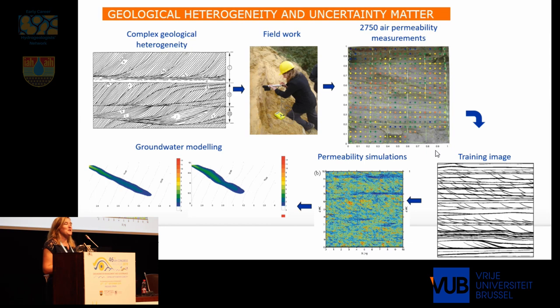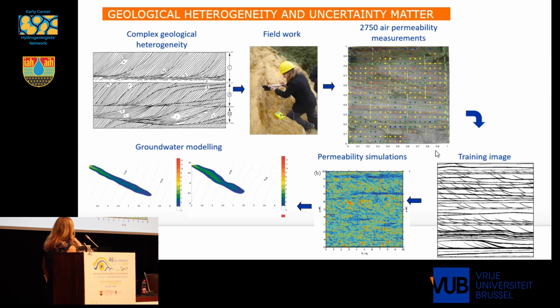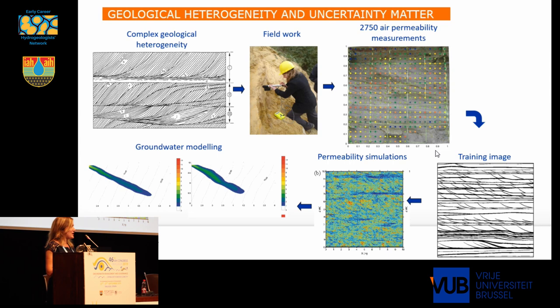I have, for example, spent quite some time working on a sand aquifer in Belgium, the Brussels aquifer. This sand from a distance might look quite homogeneous, but if you look closer you can see this kind of geological heterogeneity. We have very thin clay drapes within the sand which show quite complex patterns of heterogeneity. We mapped all these clay drapes, their orientation, their thicknesses, how they occur and where. We also measured hydraulic conductivity at many different places and at different scales in this aquifer to see how this geological heterogeneity relates to heterogeneity in hydraulic conductivity.